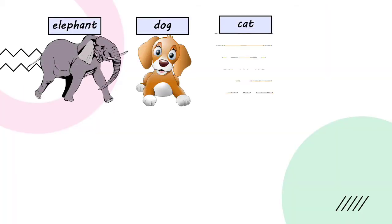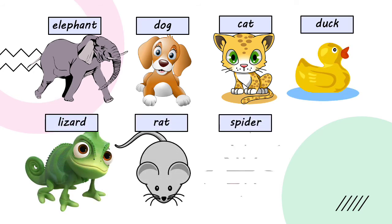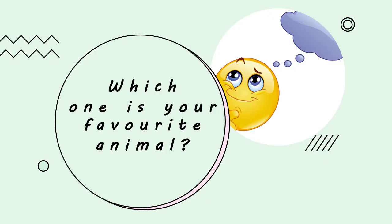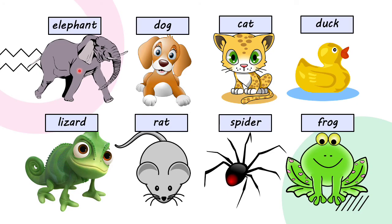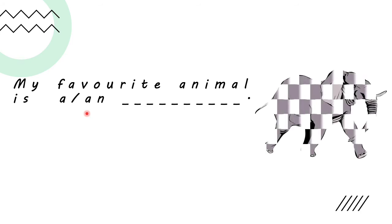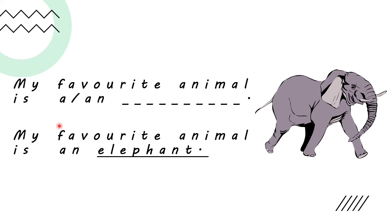Do you enjoy the chant? Great! These are all the animals that you learned today. Which one is your favourite animal? Is it an elephant? Is it a cat? Or is it a spider? To answer the question, you can say: 'My favourite animal is a / an ___.' As for me, I like elephant, so I can say: My favourite animal is an elephant.